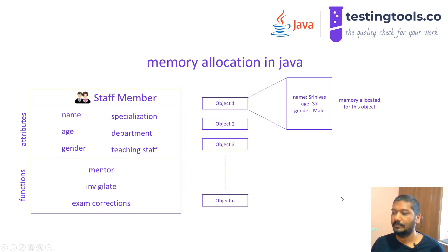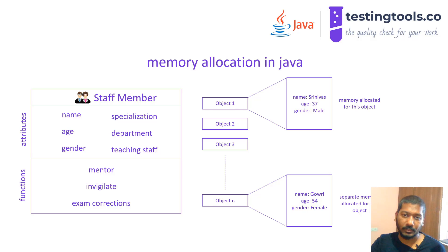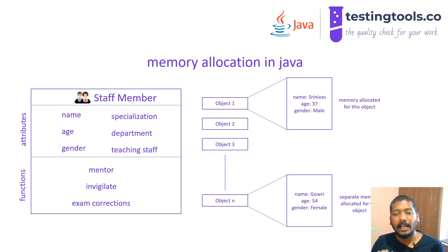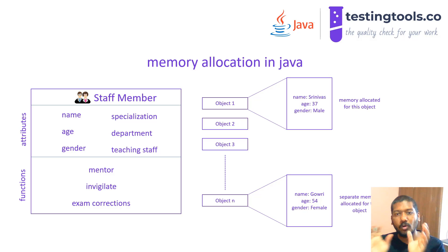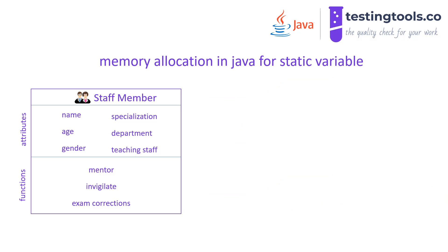Now what happens if I create another object? I can't give it the same memory space, because if I did, the values would override the previous ones. That is why Java creates a separate space for the new object, with memory allocated separately, so that two objects can hold different sets of values at one instance of time. That is how memory allocation is done in Java.